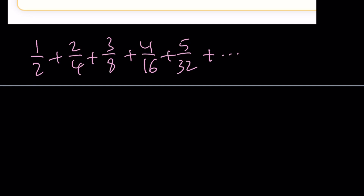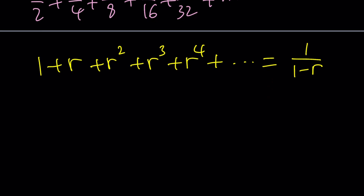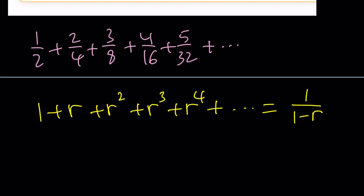We start with the infinite geometric series: 1 + r + r² + r³ + r⁴ + ... This converges when r is between −1 and 1, giving 1/(1 − r). Now, if you add two convergent series, their sum is also convergent and the limit is the sum of the limits. We'll use this to manipulate our expression into a known form.